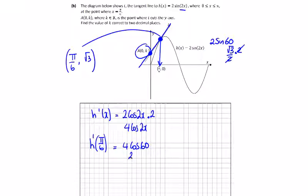h'(pi over 6) is equal to 4 times a half, and 4 times a half is 2. So we have the slope is equal to 2.